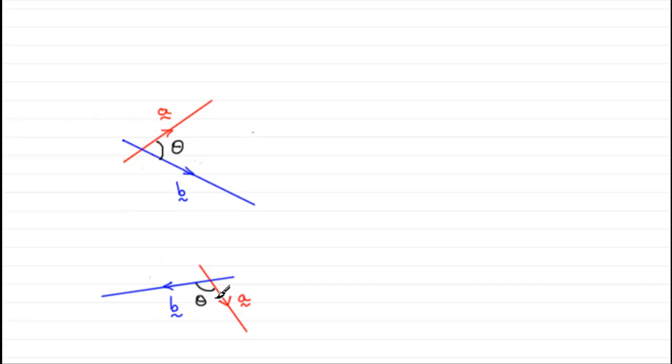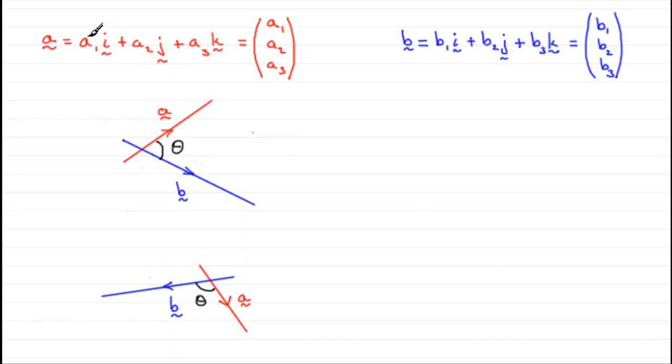So let's have a look at working that angle out. Well, suppose the two vectors A and B are given in i, j and k components. So for A, A1, A2, A3 and for B, B1, B2 and B3.